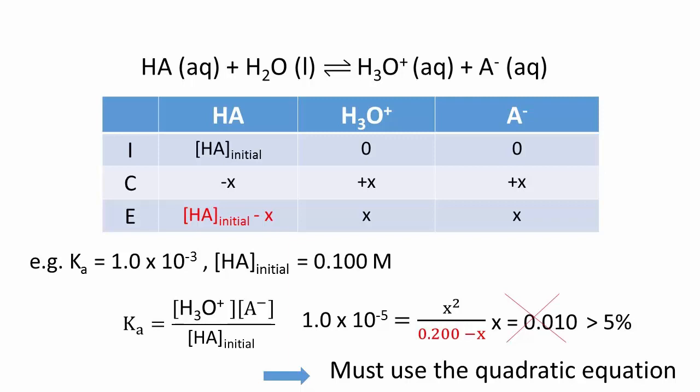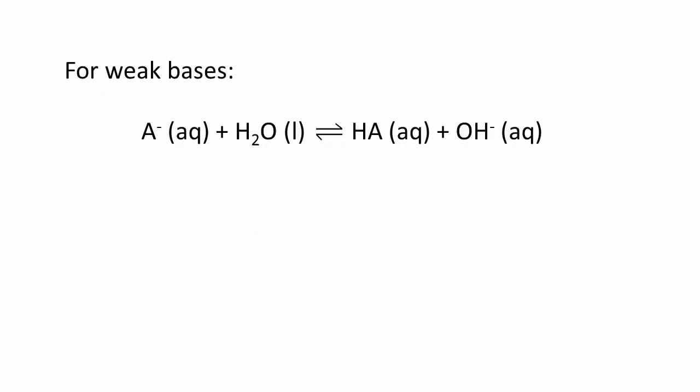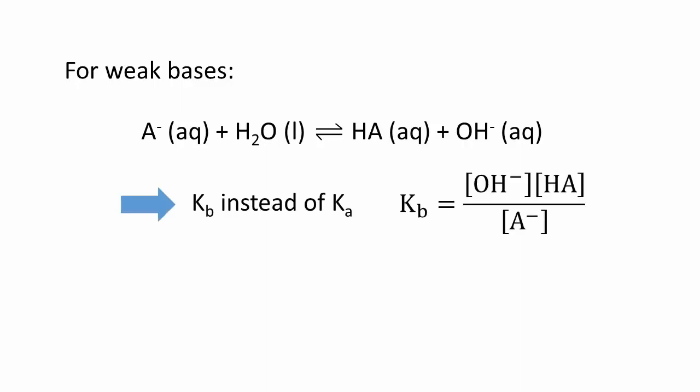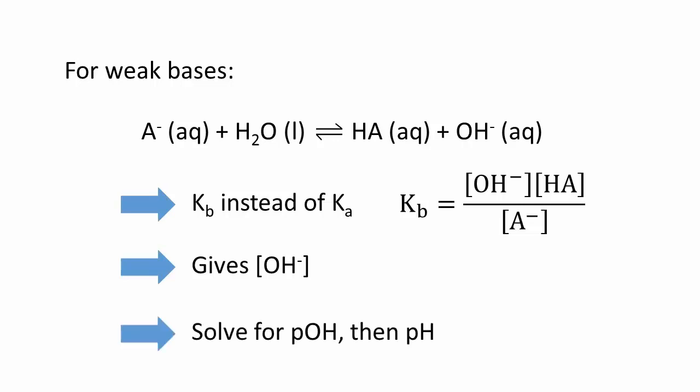Everything we did for the calculation of the pH for a weak acid can be done for a weak base. However, the dissociation constant is now referred to as Kb, and is given by the following equation. Following the same procedure just outlined for a weak acid, we can obtain the concentration of the hydroxide anion. With it, the pOH of the solution can be calculated, and the final pH is obtained by subtracting the pOH from 14.